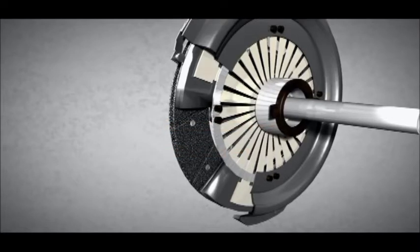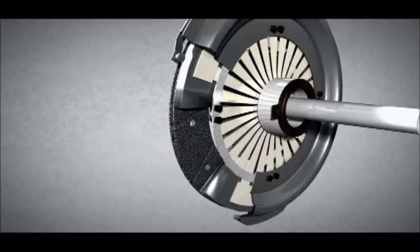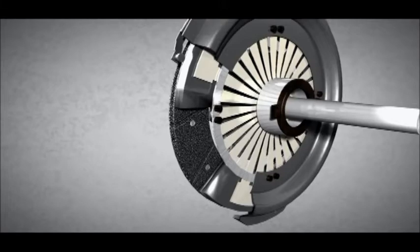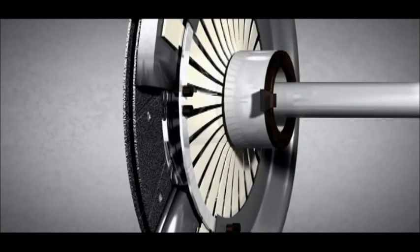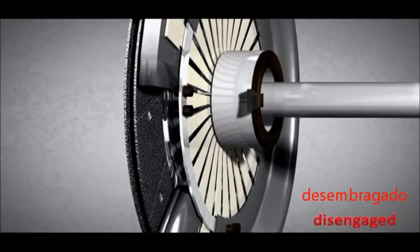When the release bearing is pushed into the spring, the inner portion of the spring moves toward the clutch disc, whereas the outer portion moves in the opposite direction.